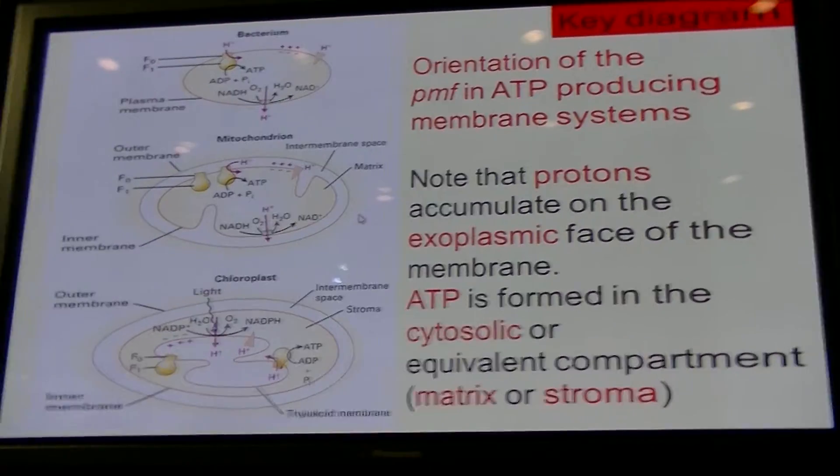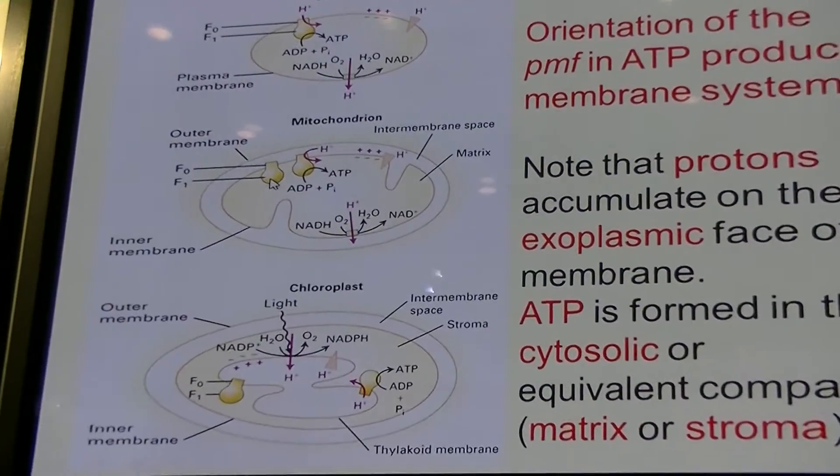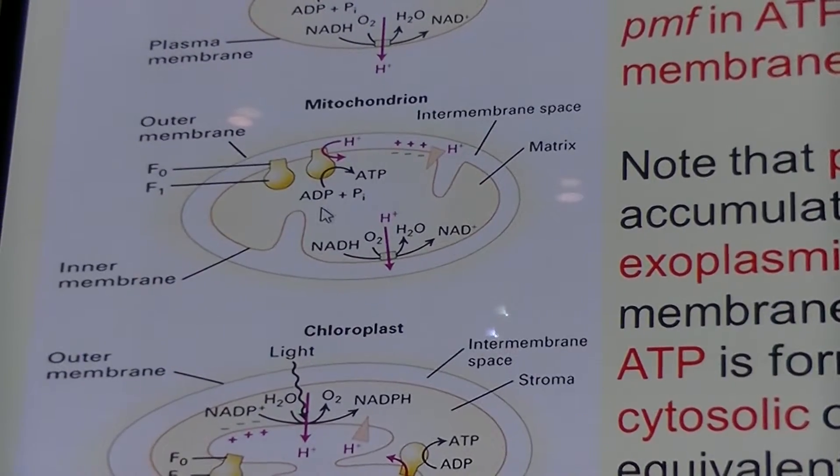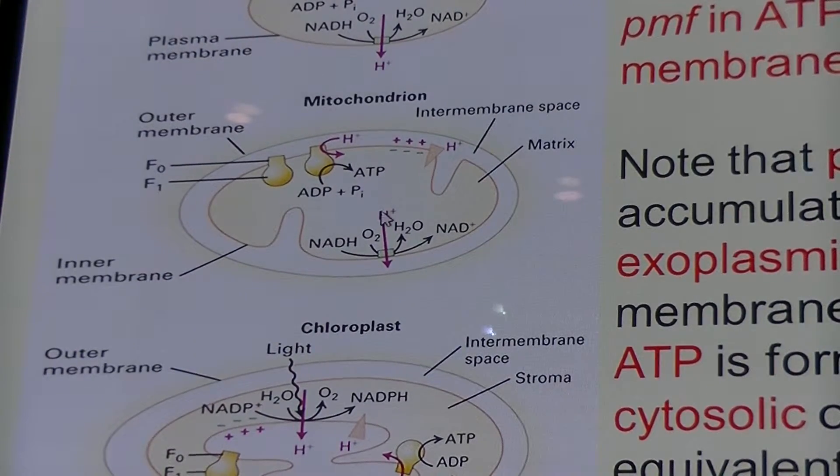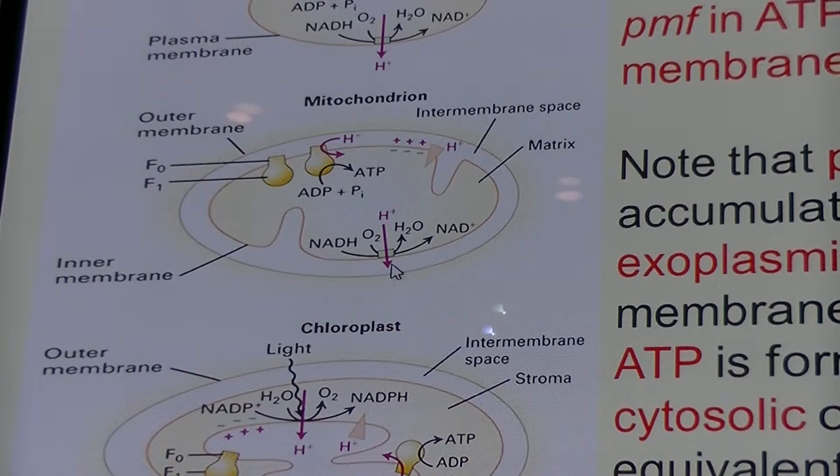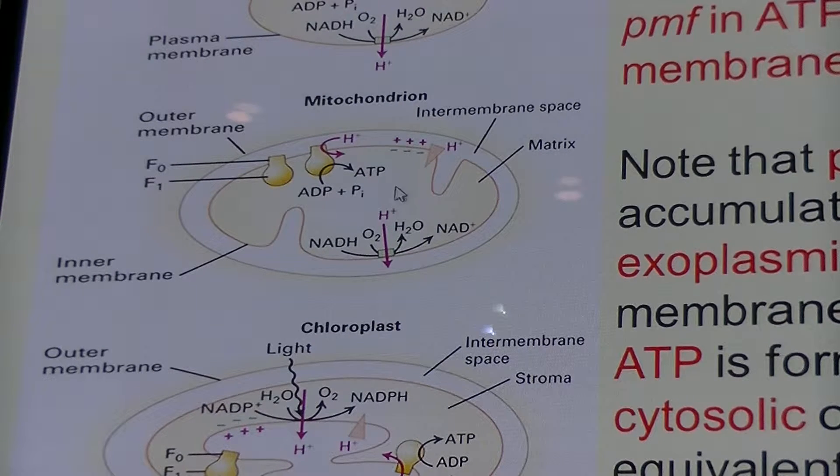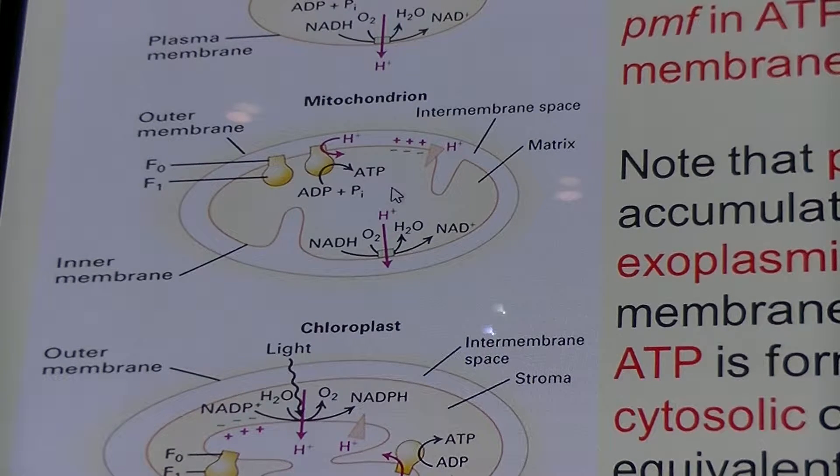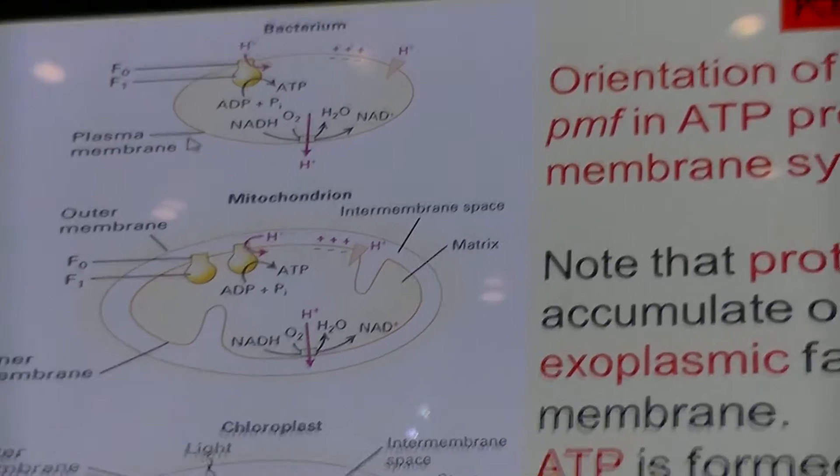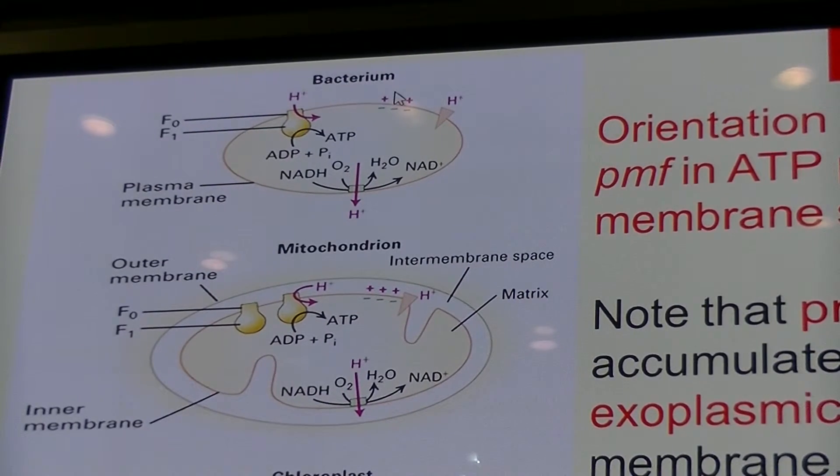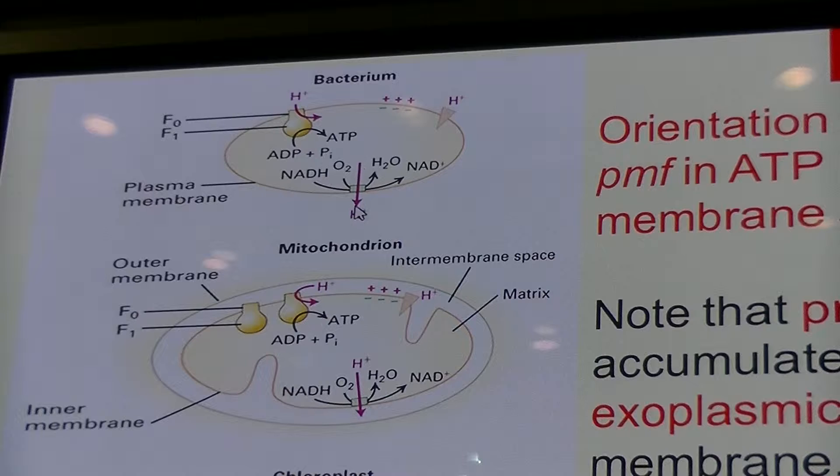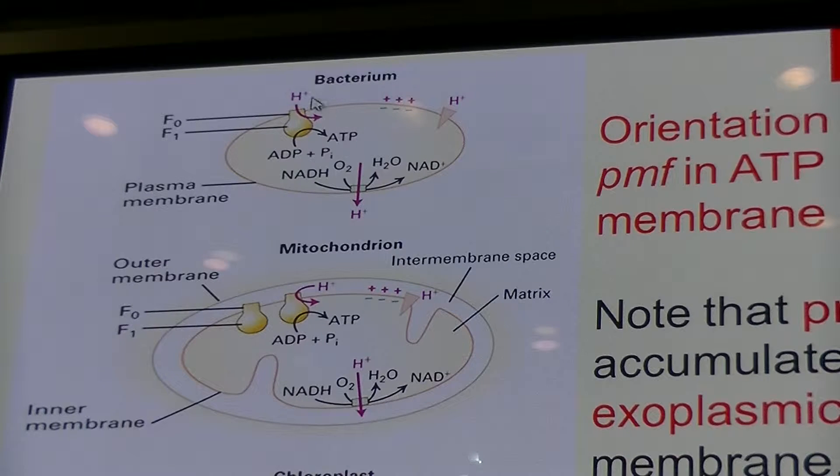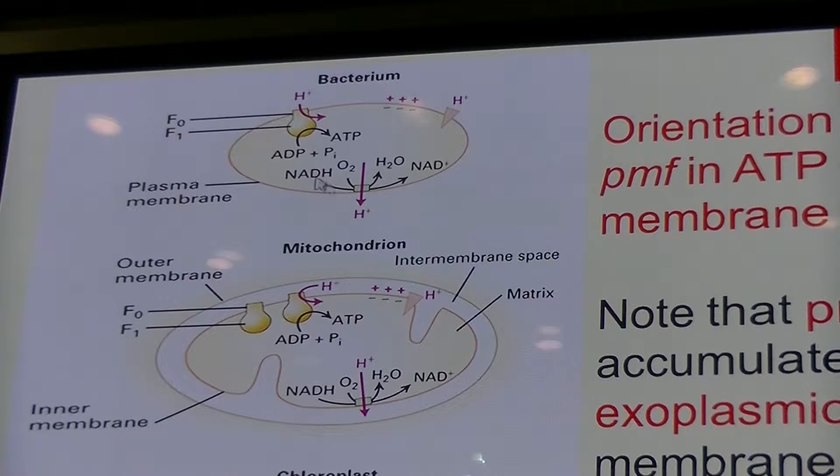One final point about these proton gradients. Here we have our mitochondria, where the F1 part sits in the matrix. That's our electron transport chain here, pumps protons out, we get a membrane potential. Virtually the same system functions in bacteria. They use their inner membrane, they pump protons out. They have the same ATP synthase, which functions in the same way.